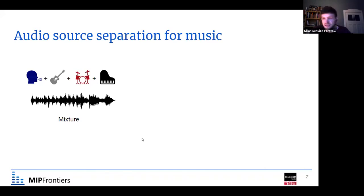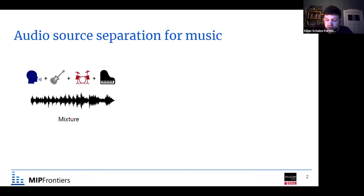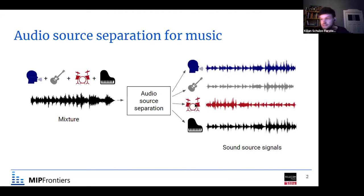For many use cases, it might be necessary to access an individual signal of one of these instruments in isolation. For example, you might want to remove the singing voice to do a karaoke version of the song, or extract only the singing voice to transcribe the lyrics, or extract the piano to automatically transcribe its score. That's what audio source separation does — it takes as input a mixture signal and provides as output the signals for each of the instruments.